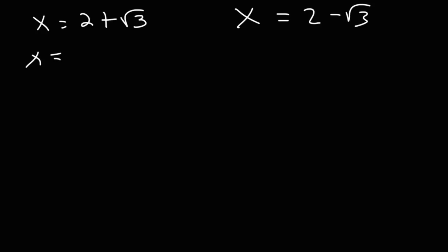Now the square root of 3 as a decimal, that's 1.73205 approximately. So adding 2 to that gives us this decimal value, 3.73205. Now for the other answer, 2 minus the square root of 3, that's going to be 0.26795, approximately.